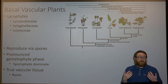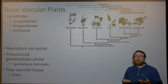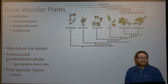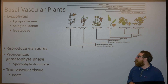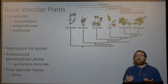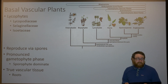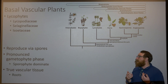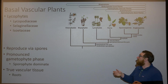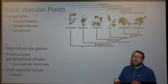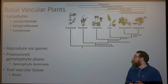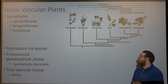Lycophytes include three major families: the Lycopodiaceae, the Selaginellaceae, and the Isoetaceae. These groups have a lot in common with our earlier plants, like the bryophytes.